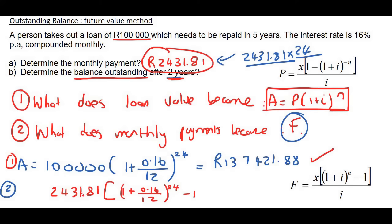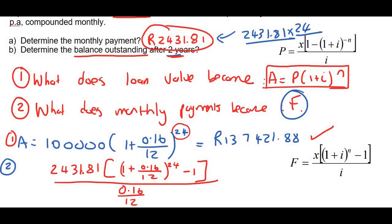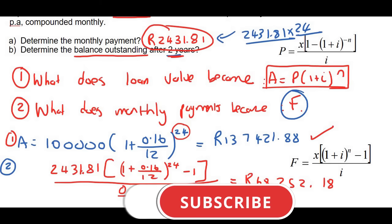If you were using the present value method, which I've got in another video, you wouldn't use 24, you would actually use 36. Because the present value looks at how many payments do you still have to make. And so we can work this out. And that gives us 68,252 rand and 18 cents.